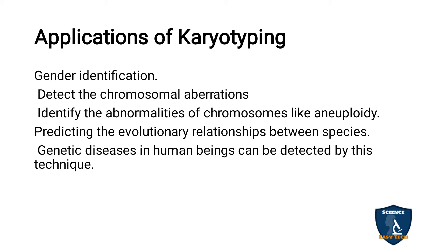Genetic diseases in human beings can also be detected by this technique. For example, if a mother or father has a genetic disease, the baby's genetic condition can be traced in the zygotic stage through karyotyping. If a baby has Down syndrome or Turner syndrome, that problem can be detected in the zygotic stage and the pregnancy can be addressed. Genetic diseases can therefore be detected through karyotyping.